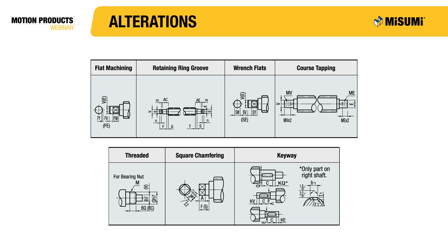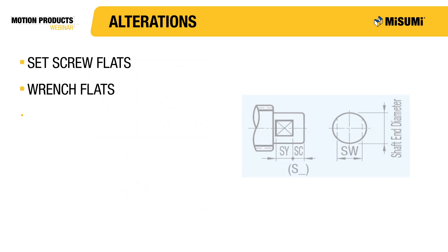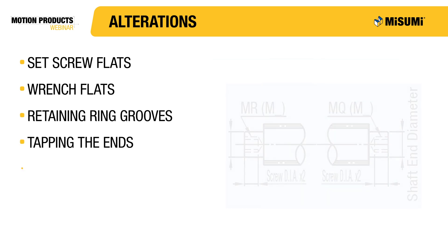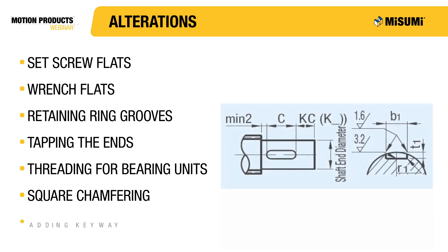Misumi calls these optional modifications alterations. The alterations available for lead screws include set screw flat machining, wrench flat machining, adding retaining ring grooves, tapping the ends, threading for bearing nuts, square chamfering, and adding a keyway. These alterations are not required, but are available if needed. You can add as many alterations as you need, as long as the alterations don't interfere with each other.